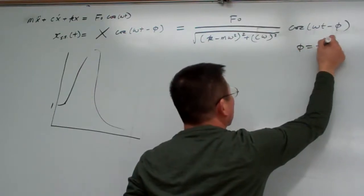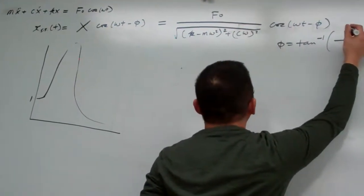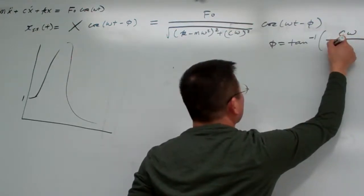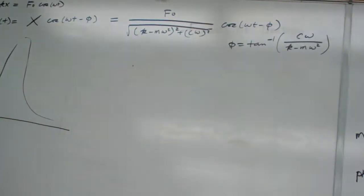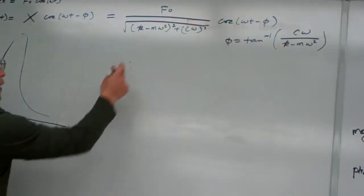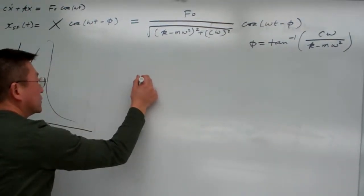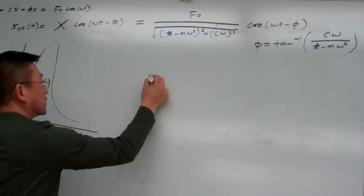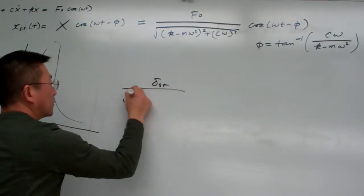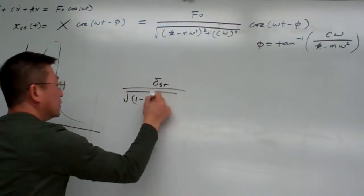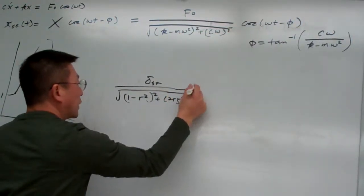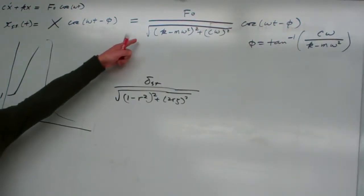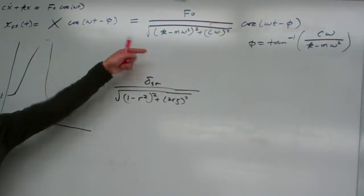Phi equal to arctangent c omega over k minus m omega squared. I think that's the result, or otherwise this form has other similar expression, simply delta st divided by square root of one minus r squared squared plus two r zeta squared.